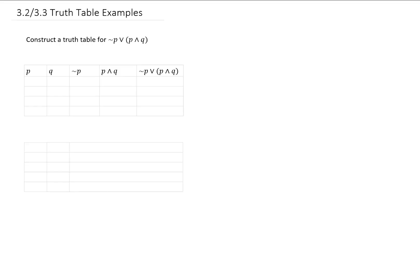Let's put all of the possible values for P and Q. Now let's fill out our column for not P. To get not P, we just reverse all of the truth values in our P column.